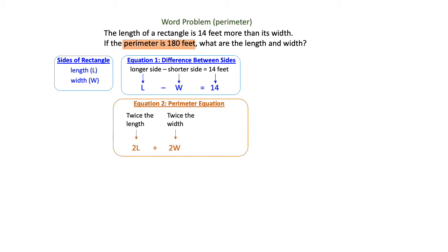The problem gives me a perimeter of 180, so I'm going to insert that in my equation and set it equal to 180. 2L plus 2W equals 180.